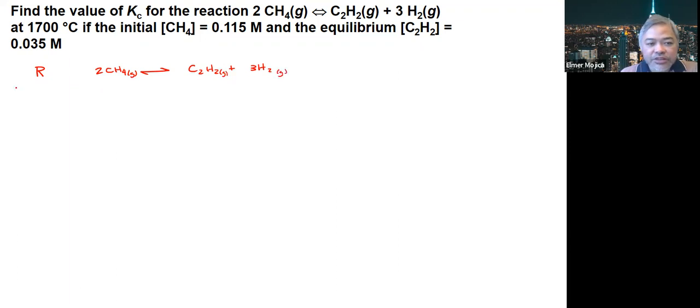And then we're going to look at the initials. So in the initial, only the concentration of methane or CH4 is given, so we put here 0.115 molar. We can assume that there's nothing of the products. Now in the changes that we have here, this is minus 2X, plus X, and then 3X.